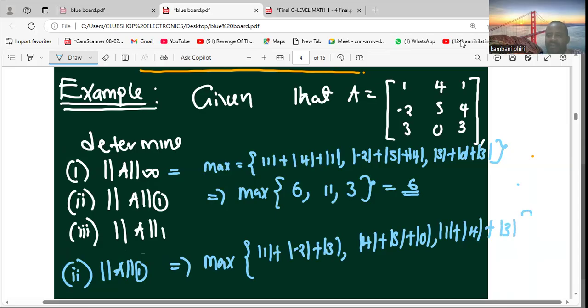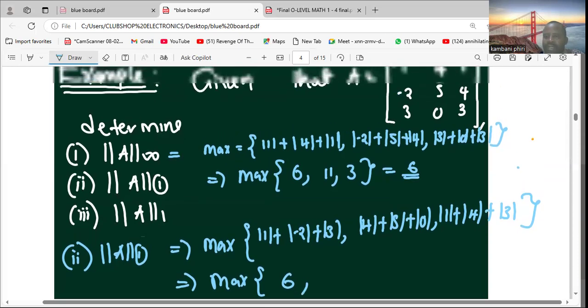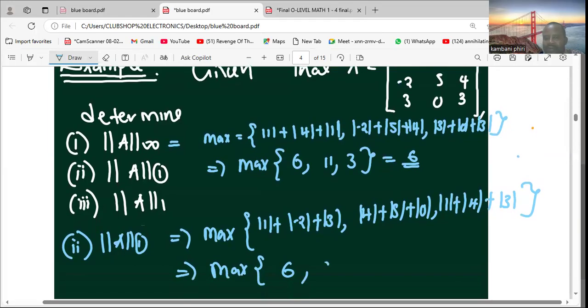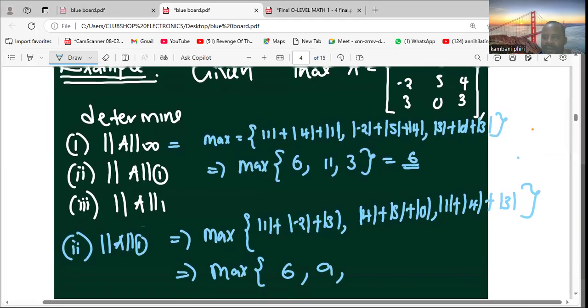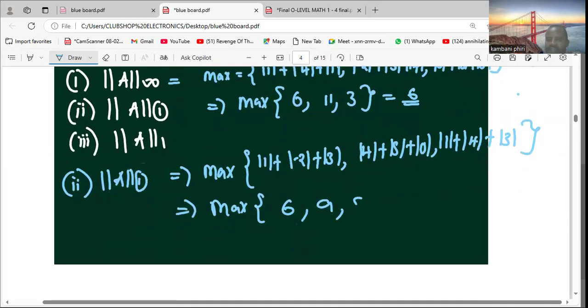From these terms we determine the maximum. We're interested in the maximum value of: 1 plus 2 plus 3 is 6, 4 plus 5 is 9 plus 0 is 9, and 1 plus 4 is 5 plus 3 is 8. So here the answer is 9.